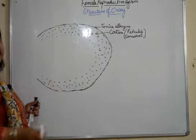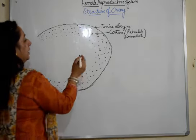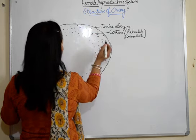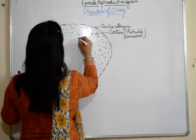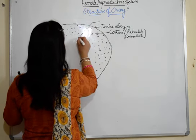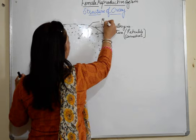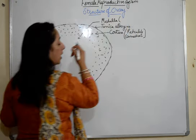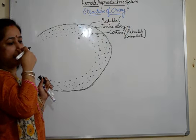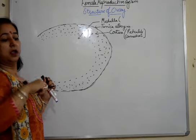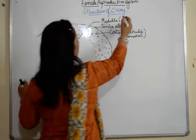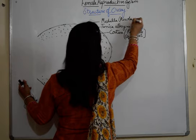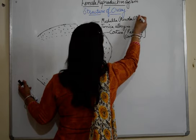Then inside, the part where all the follicles and their stages are arranged is the internal part known as the medulla. The medulla is made up of areolar connective tissues.